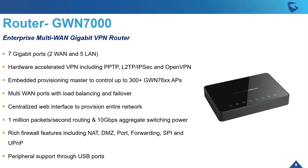Let me show you a sneak peek about the Grandstream router, model GWN 7000. It comes with 7 gigabit ports: 2 as WAN and 5 as LAN. One of the LAN ports works as PoE so you can power the router using a PoE switch. It's embedded with a master controller that can control up to 300 GWN access points. It comes with rich firewall features including NAT, DMZ, port forwarding, SPI, and UPnP, plus peripheral support through a USB port. Eventually we'll add an option to include a third WAN by using a USB LTE dongle.